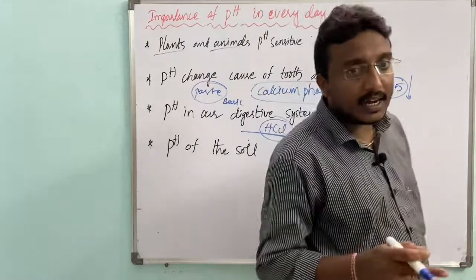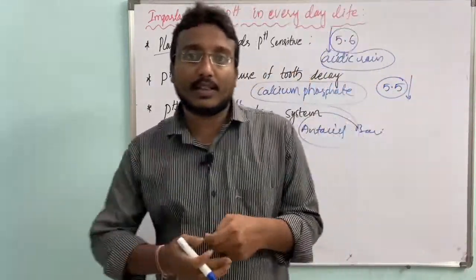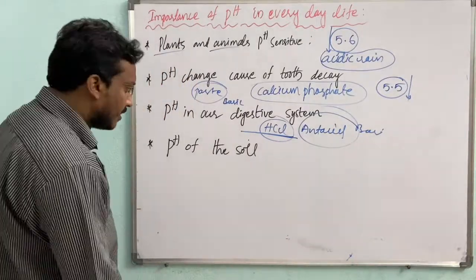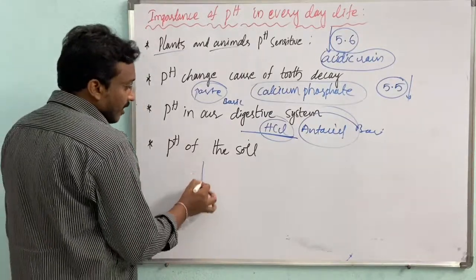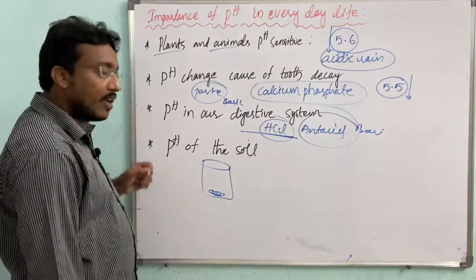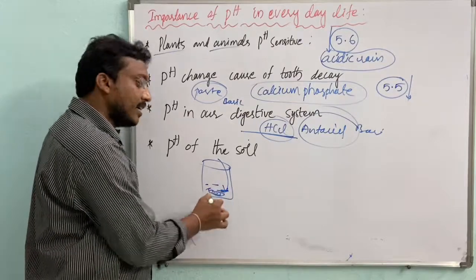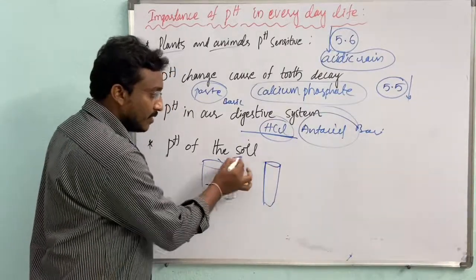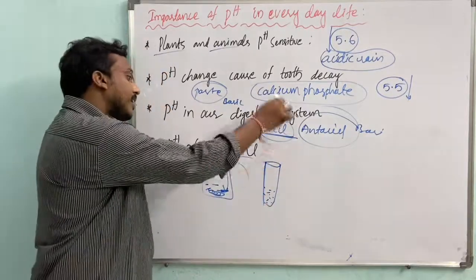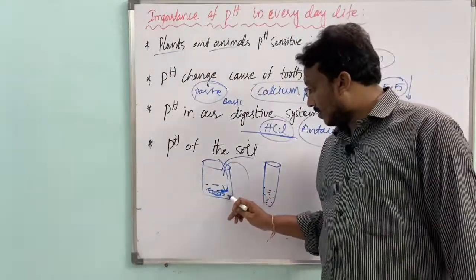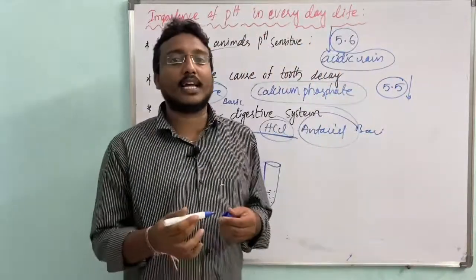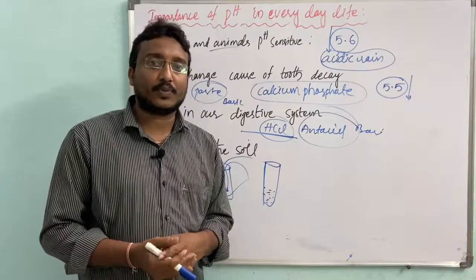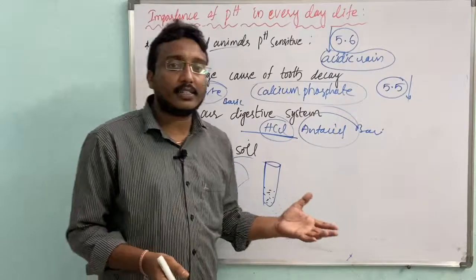The pH of soil is important — plants' sufficient growth depends on the pH value of soil. To test soil pH, take 2 grams of soil, add water, stir and filter the solution into a test tube, then dip the pH indicator. Based on the pH value obtained, we can use appropriate fertilizers to increase or decrease the pH value as needed.